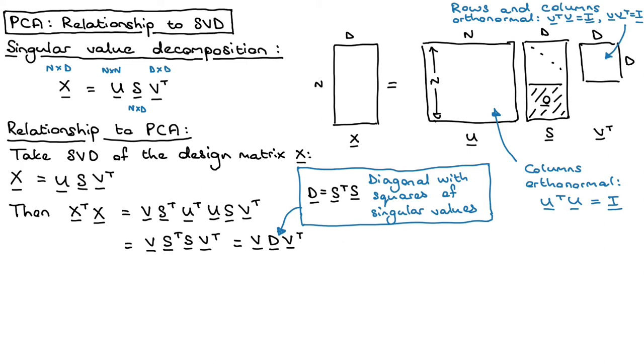So why did we do all of this? Let's take this equation that we're getting here. So X transpose X is equal to V D V transpose. And what I will do is I will multiply on this side with V and that will just give us the identity, and I will multiply with V on this side as well.